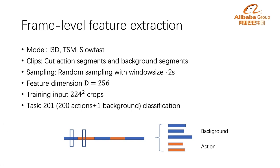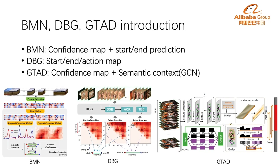The frame-level feature is extracted for proposal generation. We use three models: I3D, TSM, and SlowFast. We first cut the action and background clips of videos and randomly sample 2-second window size for input. The video is resized with short side equal to 256, and we randomly crop 224 square image size for training. The output feature dimension is 256. Instead of utilizing the 200-category classification, background clips are extracted as an extra category for better modeling temporal and spatial patterns of foreground and background. For action proposal generation, we use three models: BMN, DBG, and GTAD.